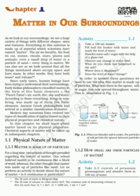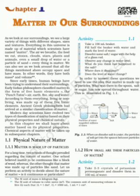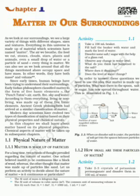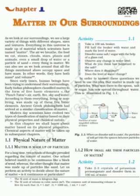Early humans classified all the material around us into five basic elements, which we call Panchatantra. They are air, earth, fire, sky, and water. According to them, everything — living or non-living — was considered under this Panchatantra.